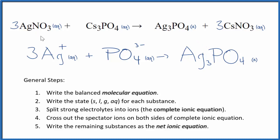This is Dr. B with the net ionic equation for AgNO3 plus Cs3PO4, silver nitrate and cesium phosphate. Thanks for watching.